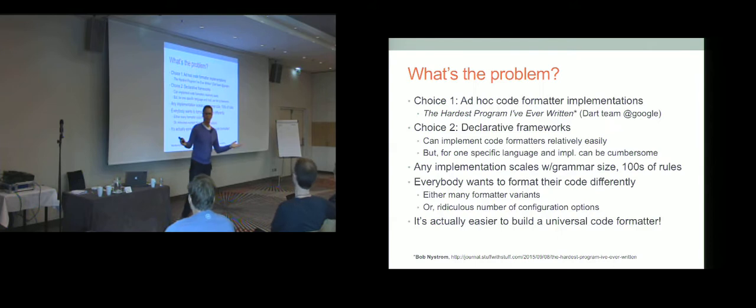We've all used code formatters. Some of you in the audience have built code formatters. So what's the problem? Well, there's a couple of ways we can approach the problem. One is we can build a program by hand. But of course, this is a very complicated multivariate optimization problem. And a member of the Dart team at Google has a blog entry that I think summarizes it well: The hardest program I have ever written.